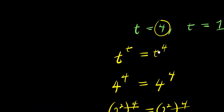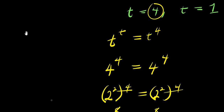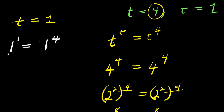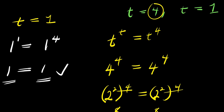For t equals 1: we have 1 to the power of 1 equals 1 to the power of 4. 1 to the power of 1 is 1, and 1 to the power of 4 is 1. Remember, 1 raised to the power of any number is 1, whether positive or negative. So both sides equal 1, confirming t equals 1 is valid.